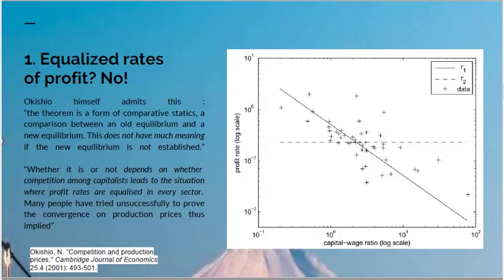In 2001, 40 years later, Okishio admitted this. He said: 'The theorem, as I put forward originally, is a form of comparative statics — a comparison between an old equilibrium and a new equilibrium. This does not have much meaning if the new equilibrium is not established. Whether or not it is depends on whether competition among capitalists leads to a situation where profit rates are equalised in every sector. Many people have tried unsuccessfully to prove the convergence of prices of production thus implied.' He accepts that there is in fact no tendency to converge on a uniform profit rate — one of the key points raised in our videos against Kleeman. Okishio himself accepts there is no movement to an equal rate of profit, so one of the key assumptions of his argument doesn't hold empirically.